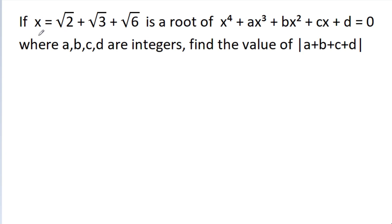In this video, we have given that x is equal to √2 + √3 + √6 is a root of x⁴ + ax³ + bx² + cx + d = 0, where a, b, c, d are integers. Then we have to find the value of |a + b + c + d|.